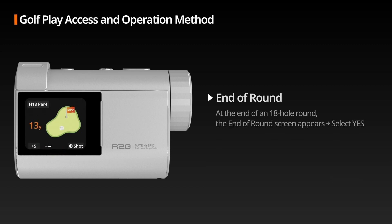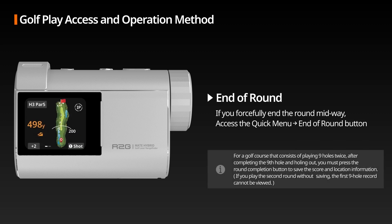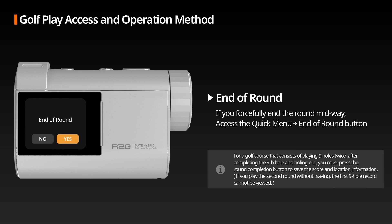End of Round: When the 18-hole round is successfully completed, the end of round screen will appear — press the confirm button to finish. From the entire course view screen, swipe down to access the quick menu and press the end of round button to forcefully end the round. For a golf course where you play nine holes twice, make sure to press the end of round button after completing the first nine holes to save your score and location information.